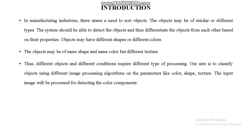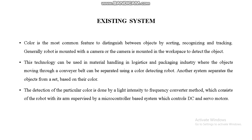In the introduction, objects may have the same shape and color but different texture, and different objects in different conditions require different types of processing. We are using image processing algorithms where parameters like color, shape, and texture are fed into the algorithms. The existing system only handles logistics and packaging industries where objects move through a conveyor belt and are segregated using robots with color sensors.